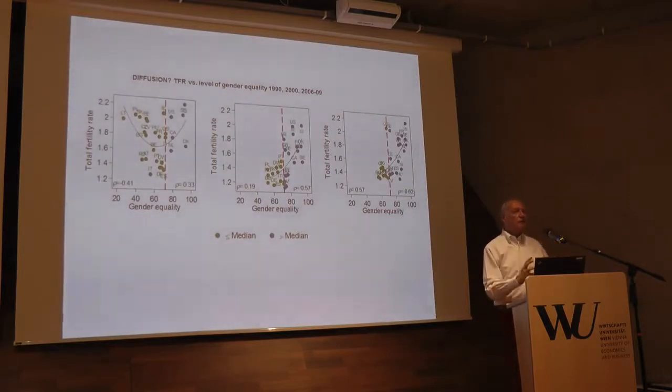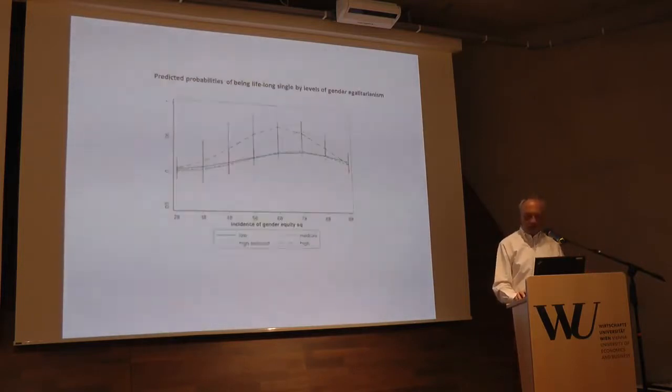So here we see a diffusion at the macro level across countries where the link seems to go exactly in the direction that we expect. And it actually fits quite nicely with that U-shaped curve that I theoretically presented.